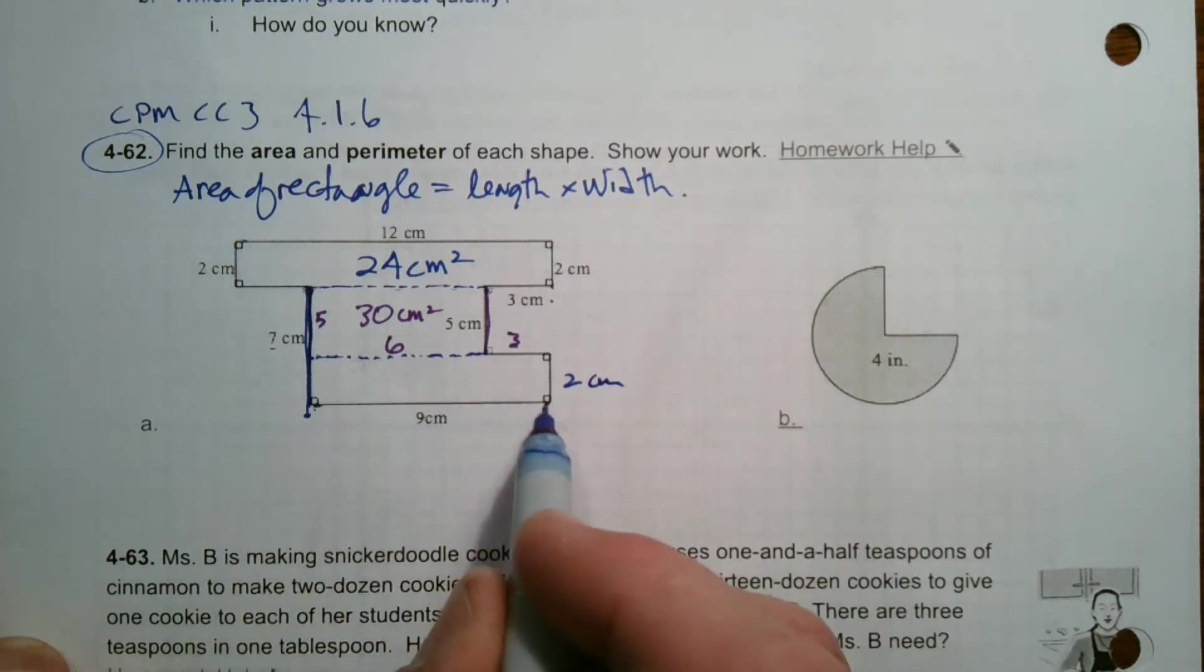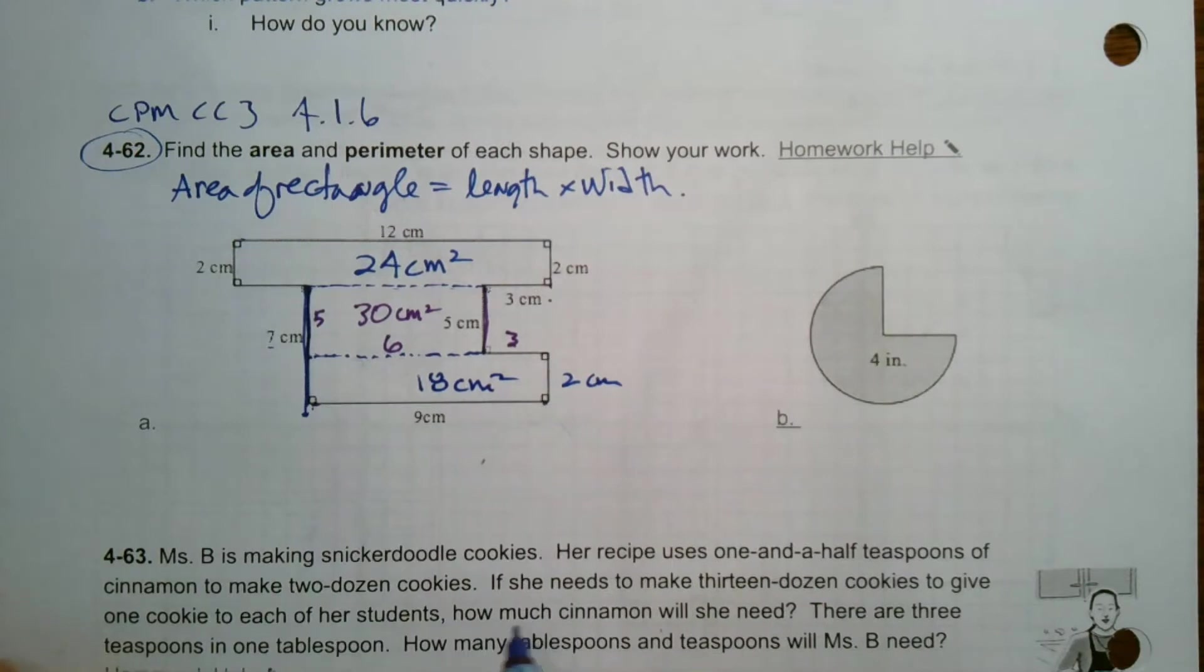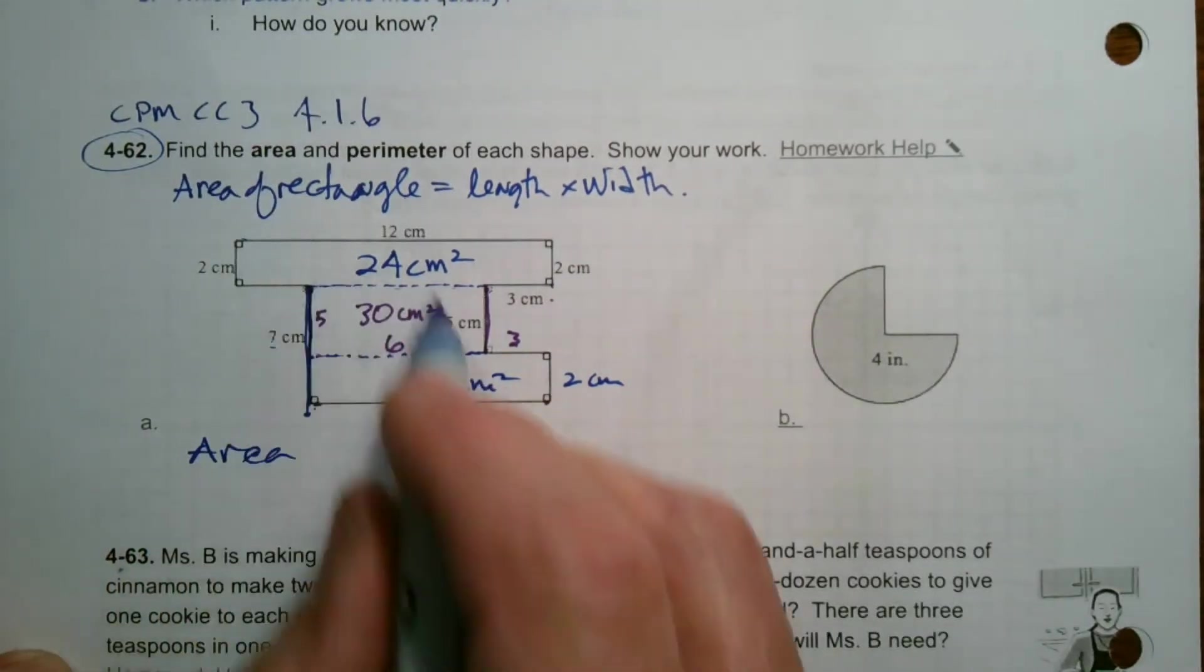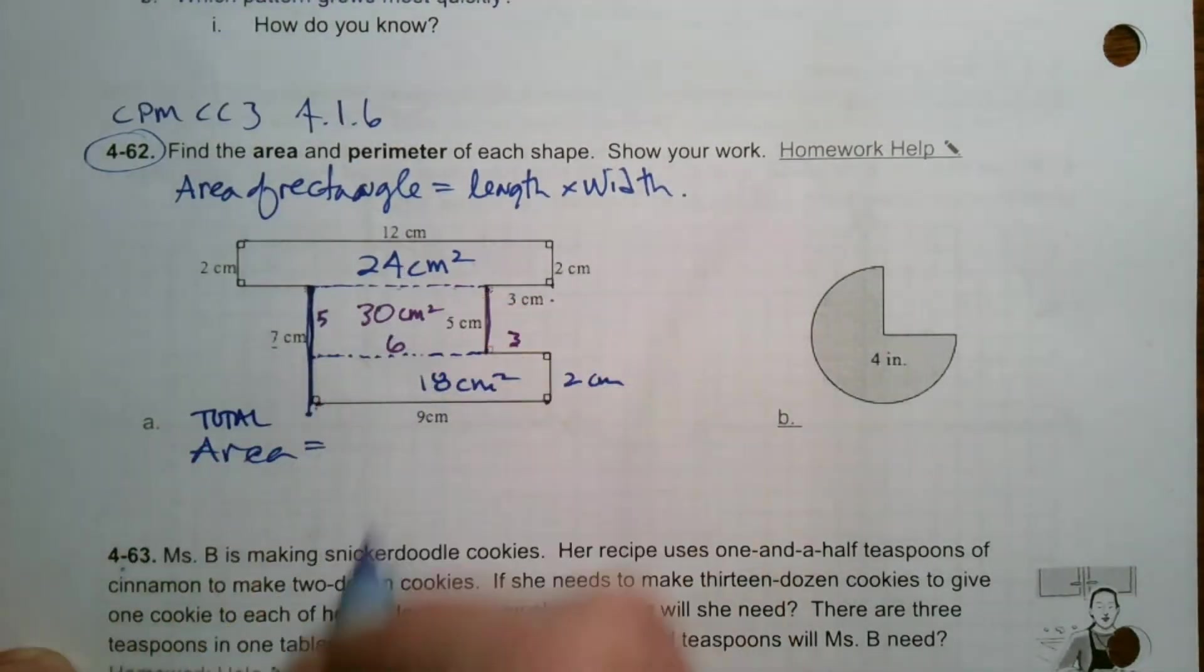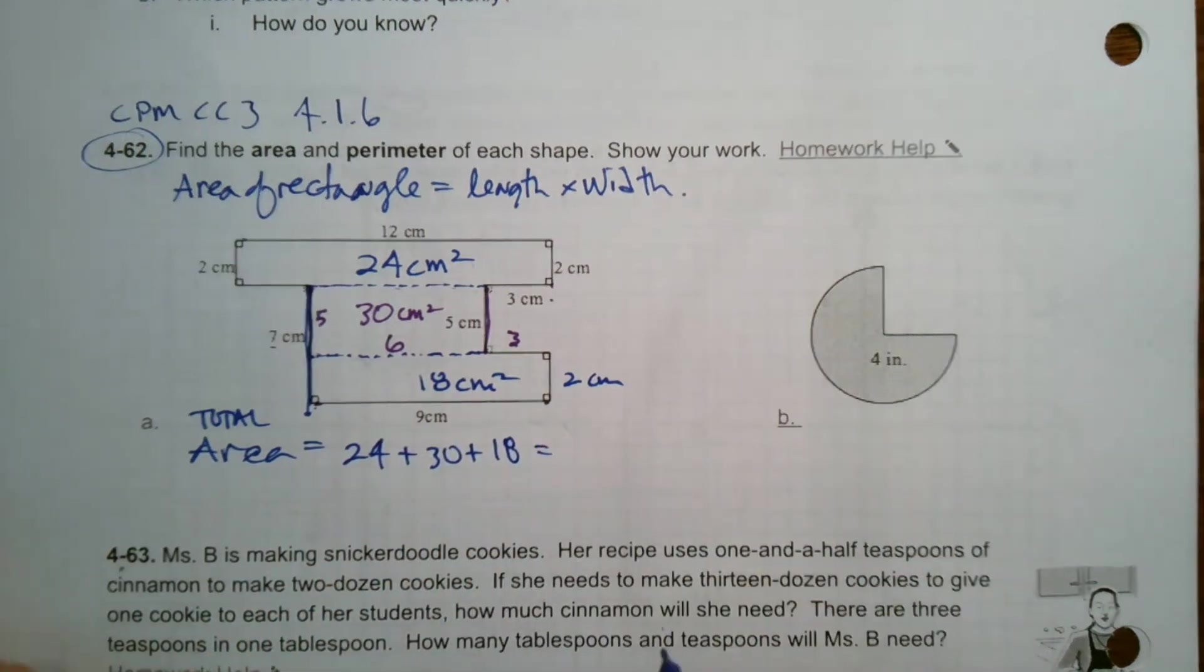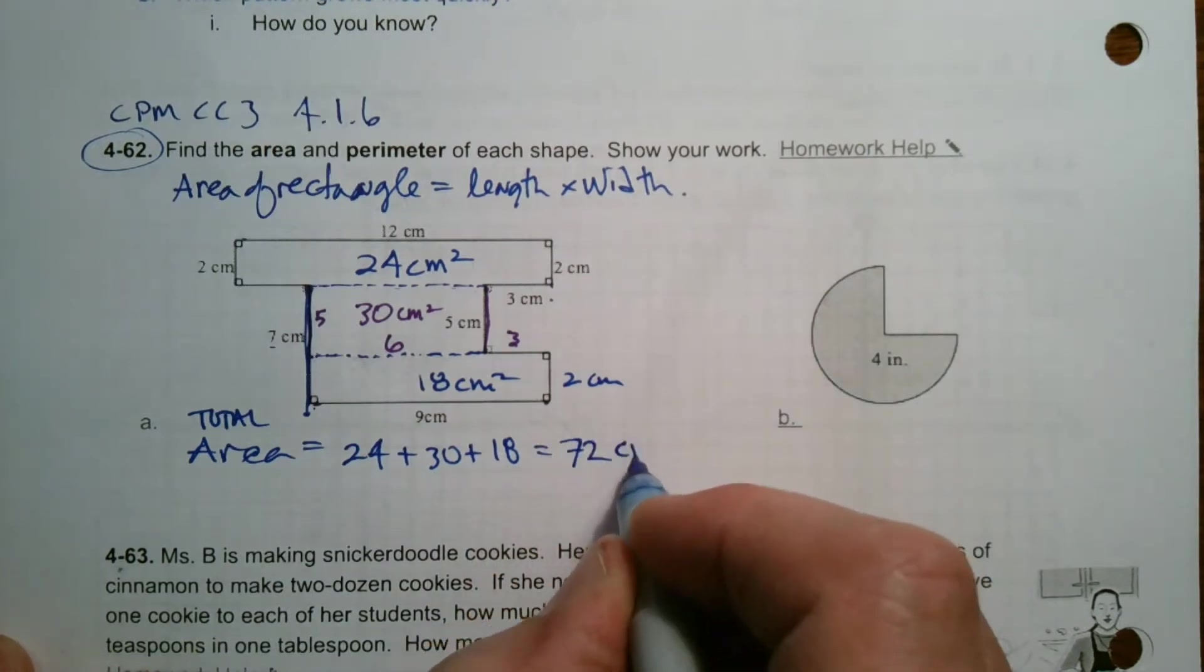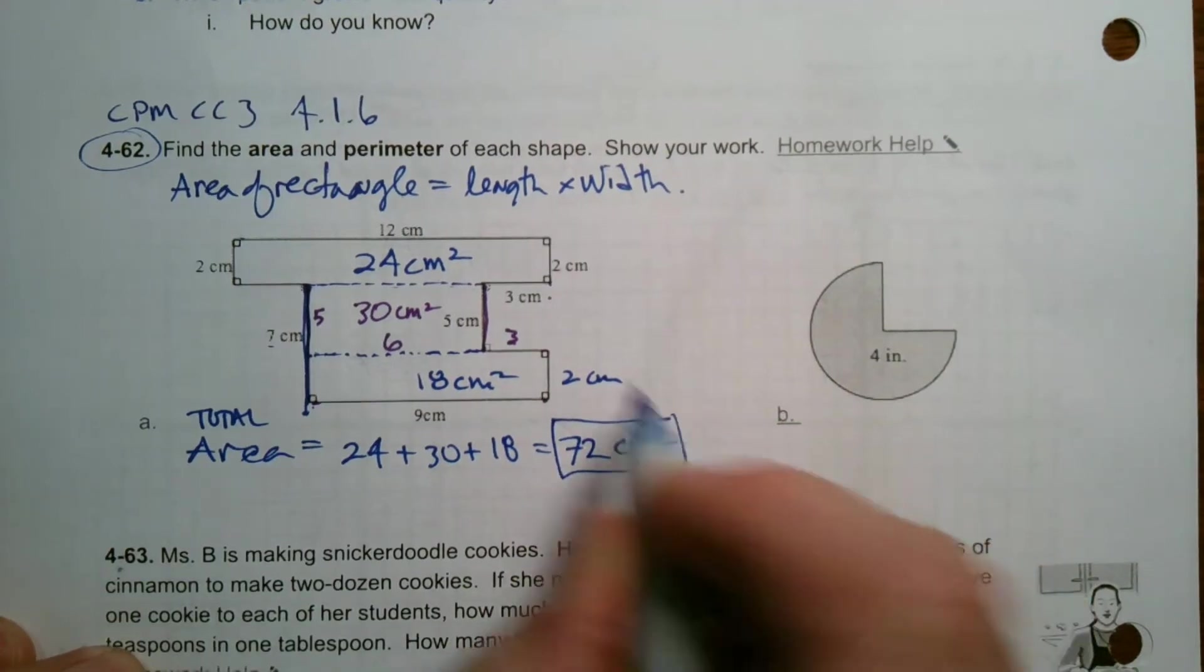So that's going to be two centimeters over here. So now I have a width of two and a length of nine. So two times nine is 18. So this is 18 centimeters squared. So my total area then is 24 plus 30 plus 18. And all that adds up to be 72. And so it's 72 centimeters squared. So that's the area for my composite figure.